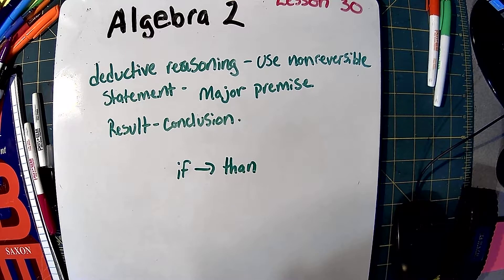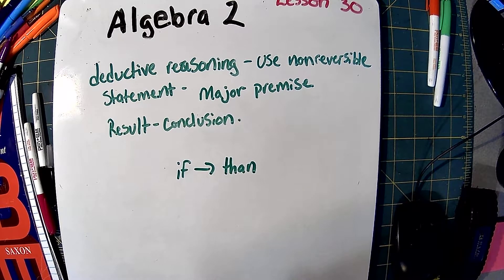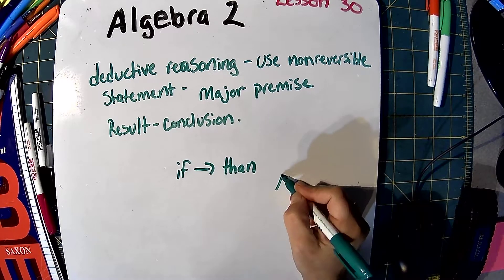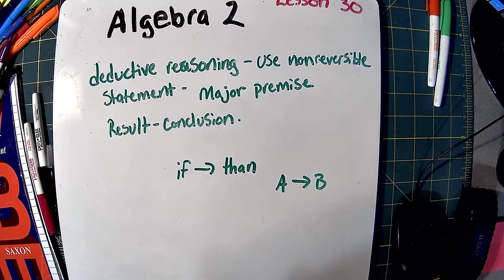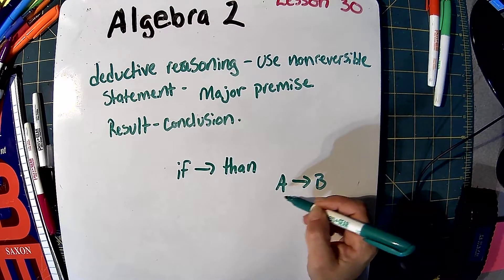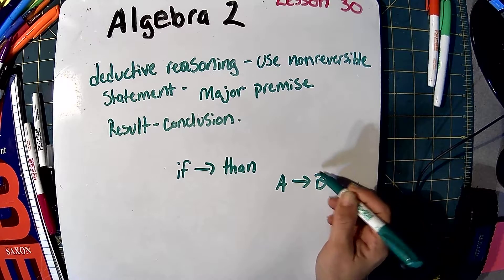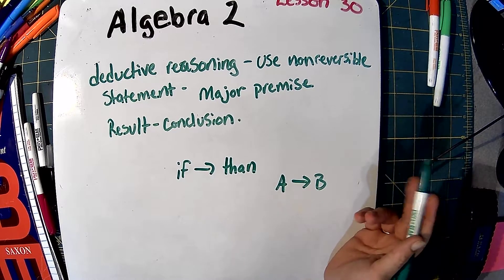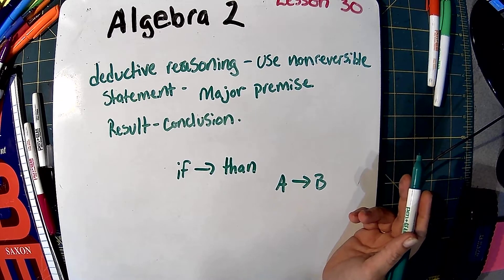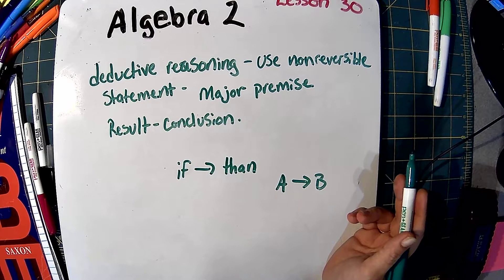A premise is non-reversible. If we say a quadrilateral is a square, it says if something is A, then it has to be B. It does not say that if B is true we can go backwards. If a quadrilateral is a square, then the quadrilateral is also a rectangle. This premise is not reversible because we can't say if it's a rectangle, then it's a square.